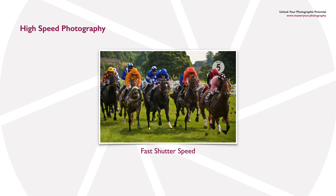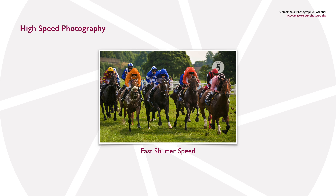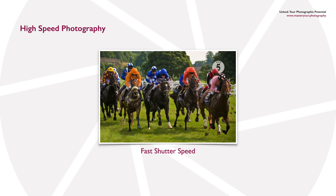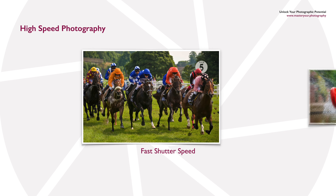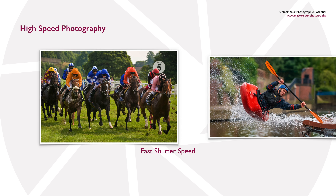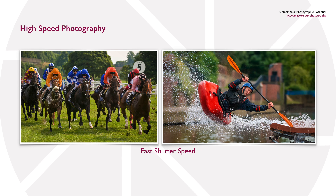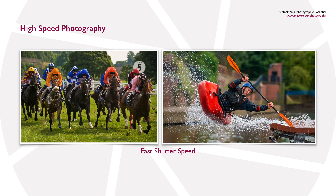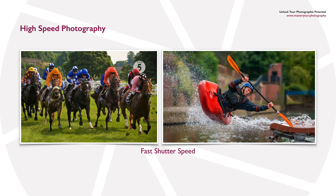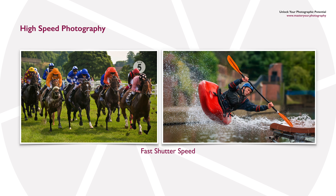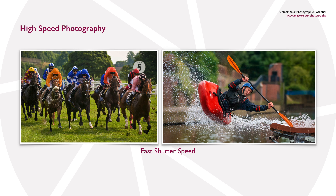Here we've got two examples of motion frozen using a fast shutter speed — racehorses and a kayaker coming off a ramp at very high speed. Both images were captured using a shutter speed of 1/1250th of a second. Anything slower than that would have resulted in a blurred image due to subject movement, while anything faster would have been absolutely fine.